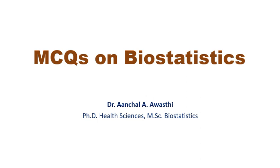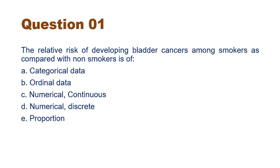So in this series, the first question is: the relative risk of developing bladder cancer among smokers as compared with non-smokers is of which data type? Categorical, ordinal, numerical continuous, numerical discrete, or proportion?